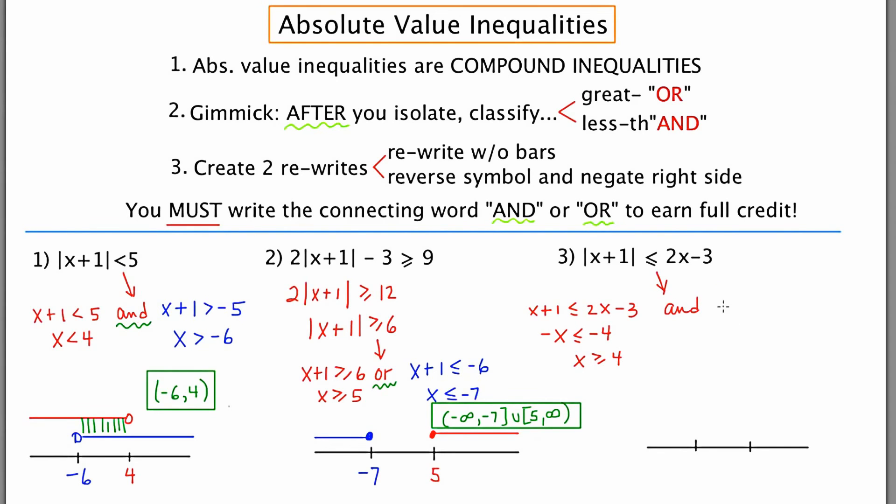For the second rewrite, we get x plus one is greater than or equal to negative two x plus three. So adding two x to both sides, we get three x is greater than or equal to two. And x is greater than or equal to two thirds. Now I'll graph both of these solutions on the number line. Because of the word and, I know I'm going to look for overlapping colors. The overlap begins at four and goes on forever to the right, which is infinity. So the solution set is going to be four in a bracket to infinity.